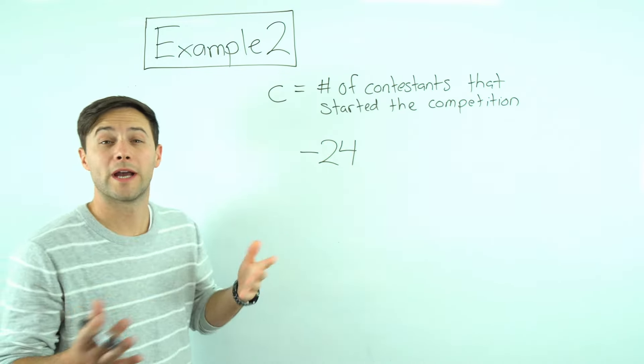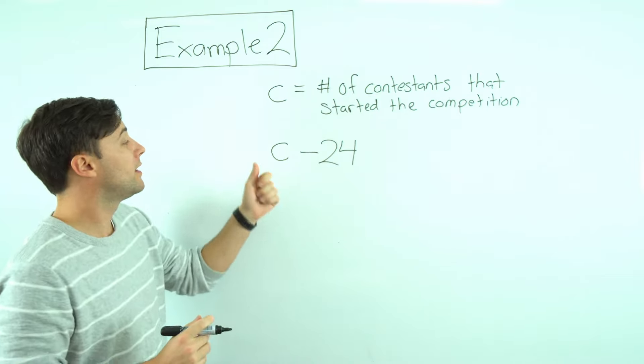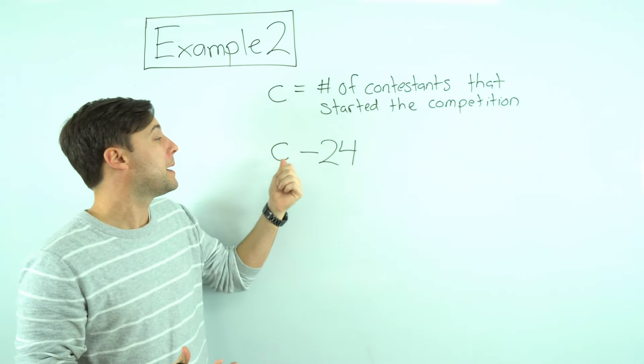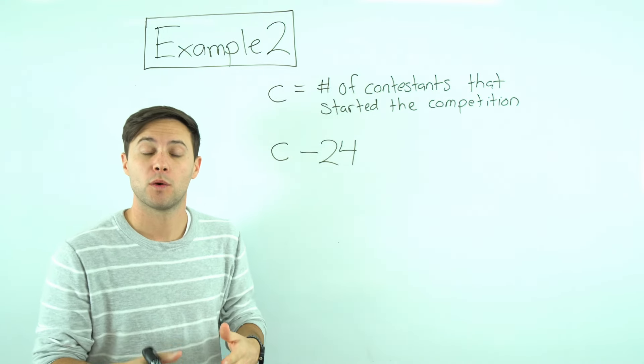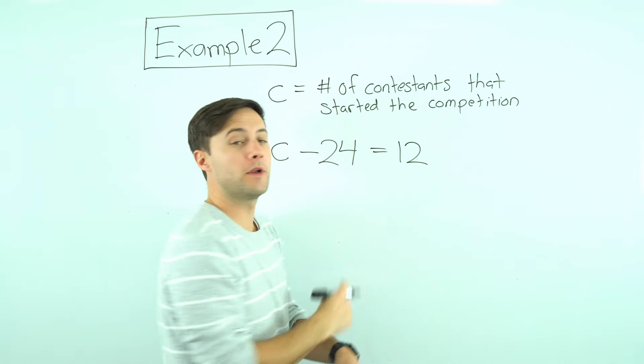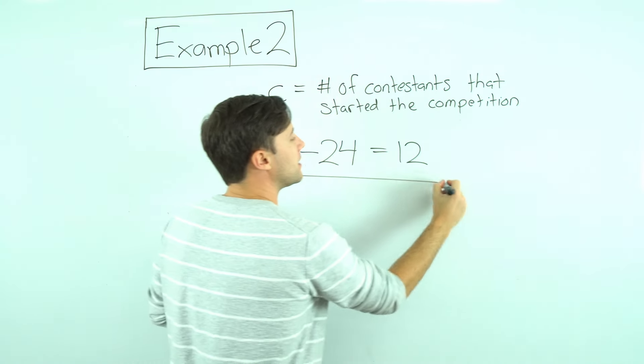I always like to write it down. It's a good idea to get in the habit of choosing a variable that makes sense for what it represents. We want a variable that represents the number of contestants that started the competition. So why don't we just say C. I'm going to put that in my equation. The number of contestants I started with, or that the competition started with, minus twenty-four. Those are the ones that got eliminated. How many are remaining? They told us there were twelve remaining. So that's going to be equal to twelve.